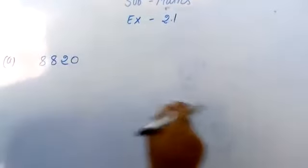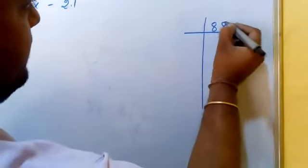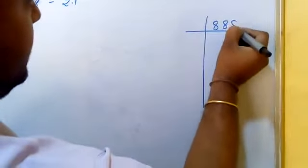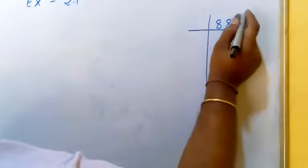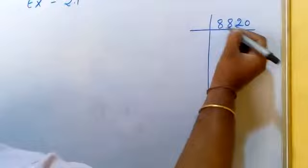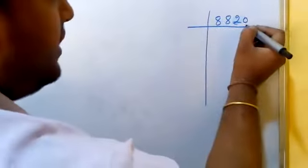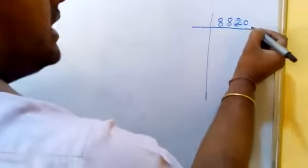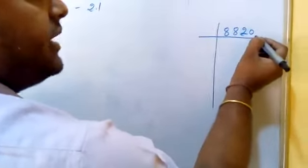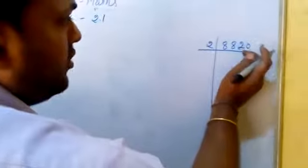Sabse pehle hum karte hain iske factors. 8,820 — toh sabse pehle hume factor karna hai. Last mein hamara unit place par 0 diya gaya hai, yaani ki yeh number 2 se divisible ho sakta hai, kyunki iske factors ho sakte hain 2, 4, ya 8.